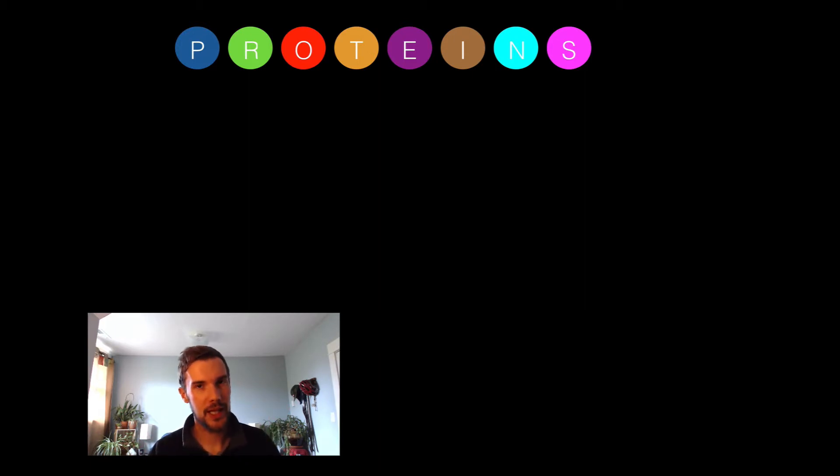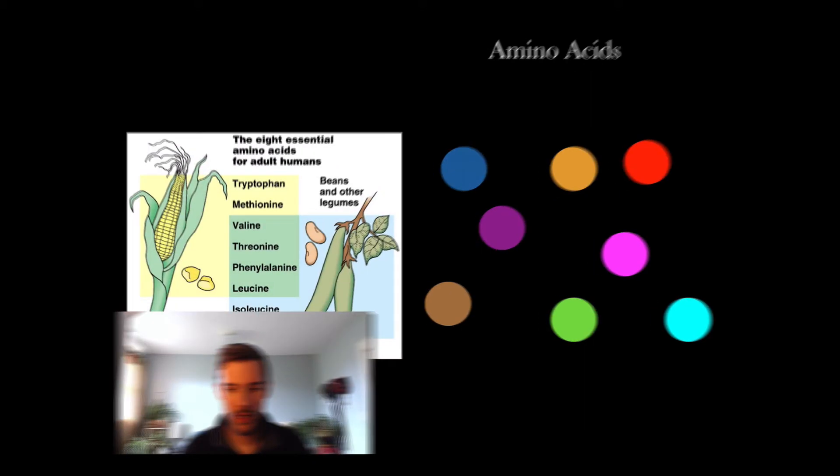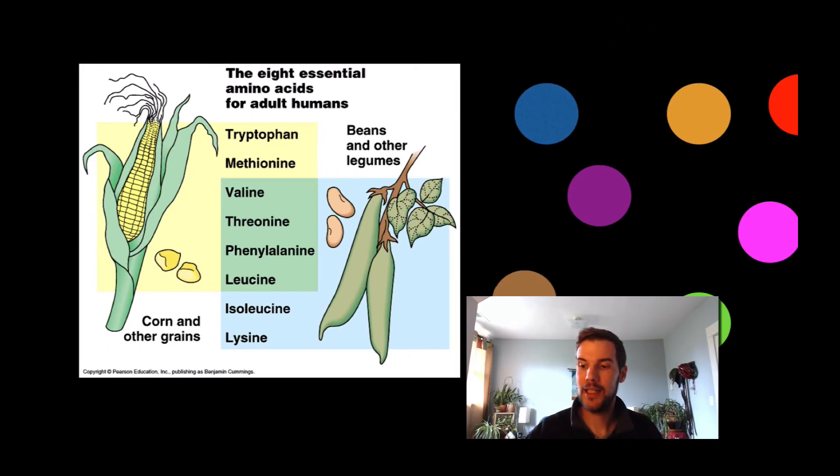Proteins are made from the subunit amino acids. Amino acids have unique structures but there are certain subunits that are the same. We definitely need 20 amino acids in our body and we can get them through plants, but we can't get them from one source of plant.